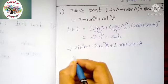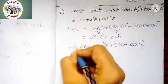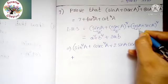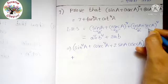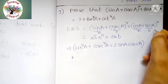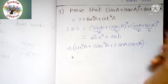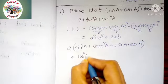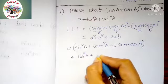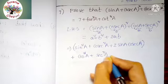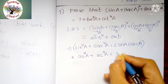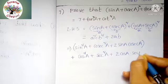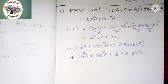Next, for the second bracket, this is A and this is B, also in the form of A plus B whole squared. So the formula gives cos squared A plus secant squared A plus 2AB, which is 2 cos A into secant A.